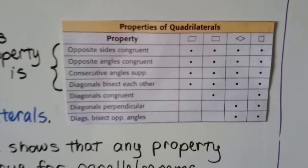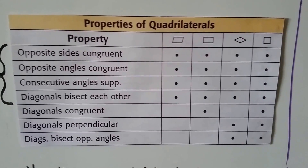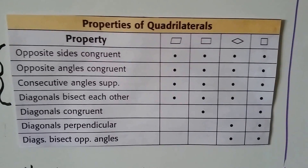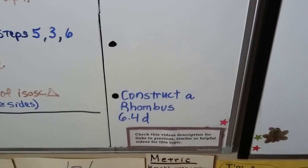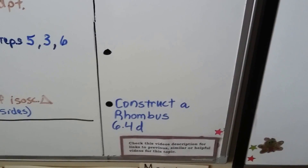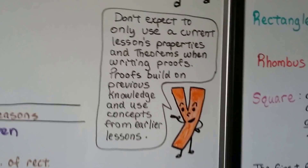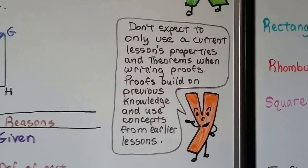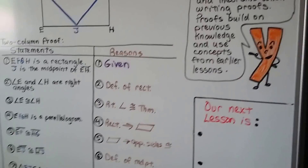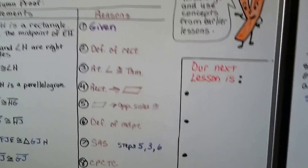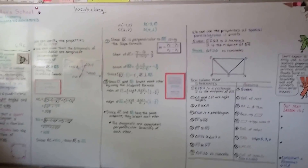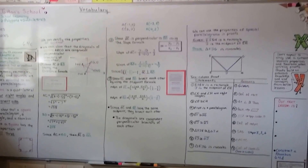Our next lesson is 6.4d, where we're going to construct a rhombus. Don't expect to only use a current lesson's properties and theorems when writing proofs — proofs build on previous knowledge from earlier lessons, so you may have to pull something from a couple chapters ago. Get your compass ready; we're going to be making a rhombus. Hope to see you there. Have a great day — bye!